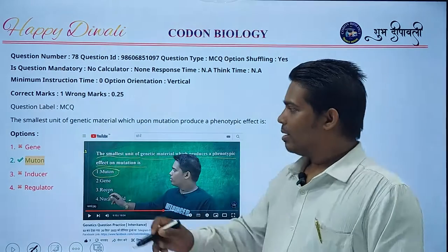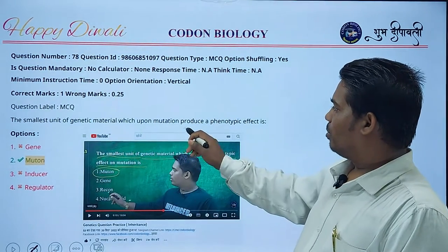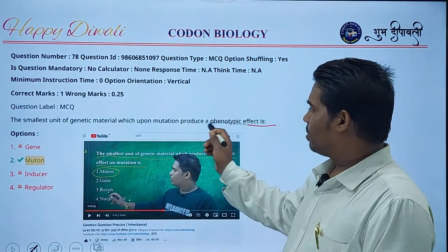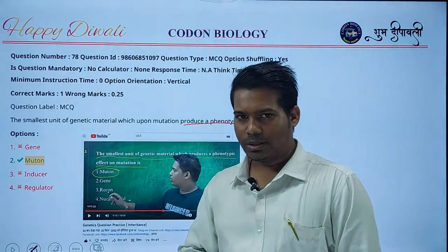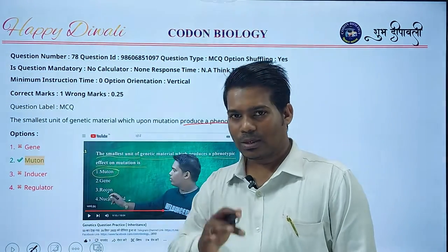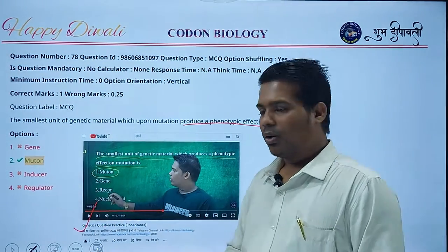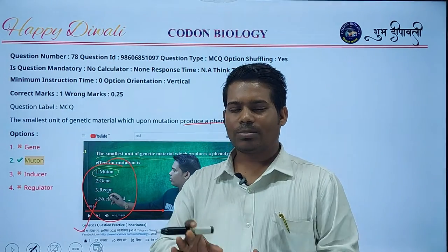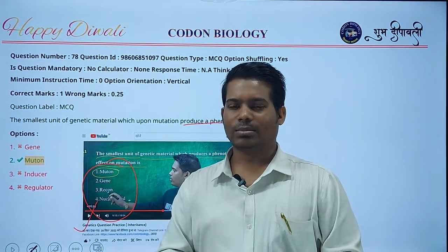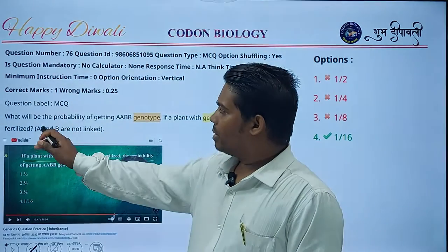The first question was: the smallest unit of genetic material which upon mutation produces a phenotypic effect — with options including muton, inducer, and regulator. Just before the last lecture before the exam, I solved this question; however, the options were slightly different, but the concept and question are very similar.